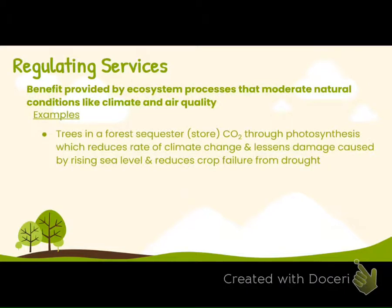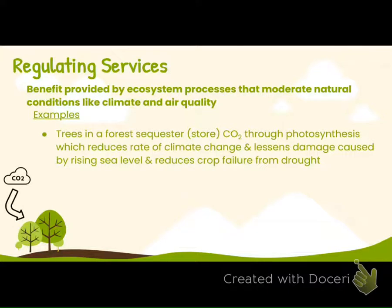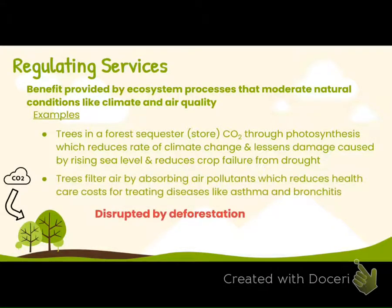Regulating services are benefits provided by ecosystem processes that moderate natural conditions like climate and air quality. If there are no trees, CO2 won't be stored through photosynthesis, leading to more CO2, hotter temperatures, more fires, rising sea levels, and reduced crops due to drought. Additionally, without trees filtering air pollutants, we'll see more problems with asthma and bronchitis. All these services are disrupted when we remove trees.